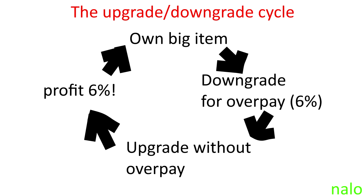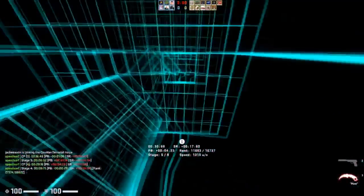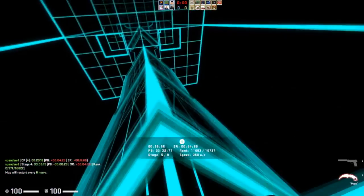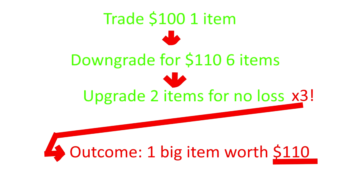You're probably wondering: now that I've downgraded all these items, how do I keep that 6% profit margin if I want to upgrade again? Simply put, you don't overpay the person you're trading with, or you could alternatively only upgrade two of those items at a time, which doesn't require as much overpay. For example, let's say you trade one big $100 item for a downgrade of 6 items worth about $110. You made about a $10 profit margin. The main thing you want to do is trade 2 of those items up at a time — going from 6 items to 3 items — so you don't have to really overpay the person since they aren't really downgrading, they're just splitting their item in half.